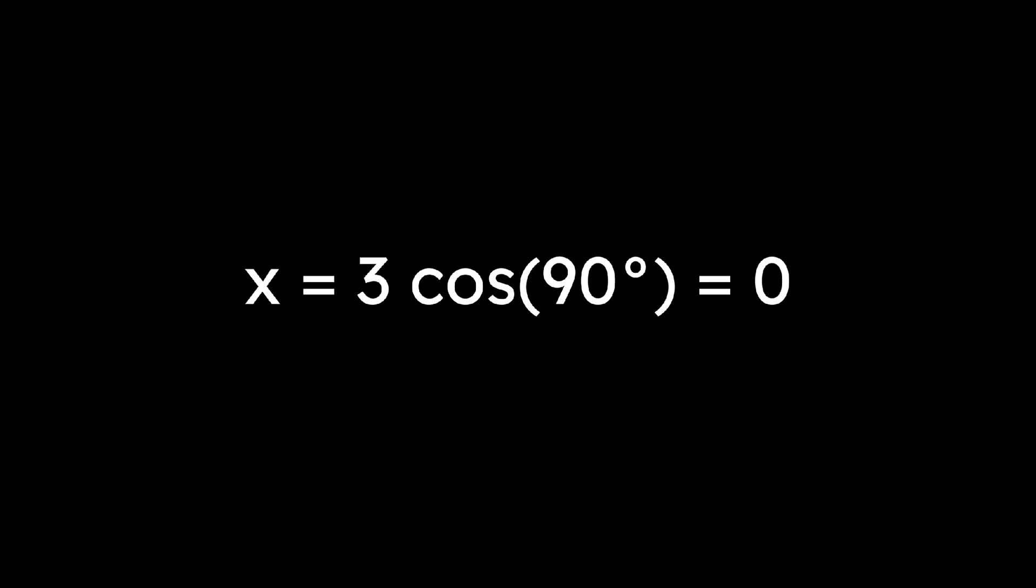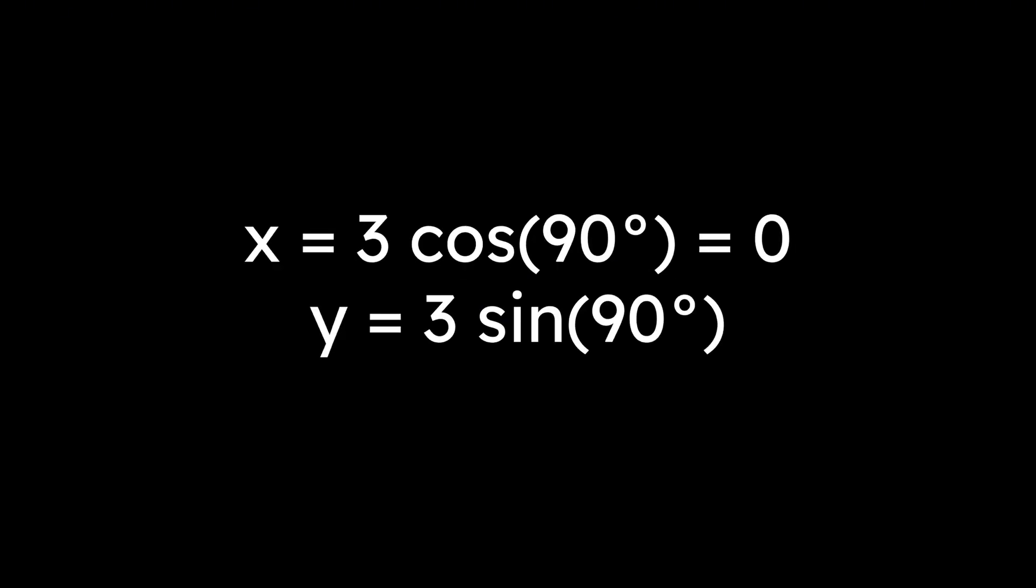For example, the point 3 comma 90 degrees from before converts to rectangular form using the formulas x equals 3 cosine of 90, which is just 0, and y equals 3 sine of 90, which is just 3. Thus, the point is again 0 comma 3.